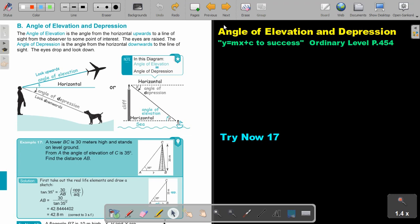In this video of trigonometry, we are going to focus on angle of elevation and depression. You will find this on page 454 in the Namibia Ordinary Level Mathematics Textbook, Y equals Mx plus C to success.